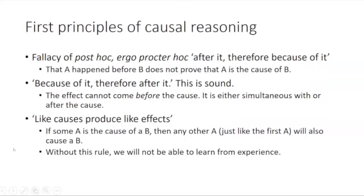The last thing to discuss is some first principles of causal reasoning. The first is the fallacy of post hoc ergo propter hoc — inferring that because one thing happened after another, the first is the cause of the second. In other words, that A happened before B proves A is the cause of B. But the simple fact that A happened before B does not prove A caused it. Many things happen before other things without causing them — for instance, my rapping on the desk happened right before a baby was born somewhere in China, but my rapping was not the cause of that baby's birth.